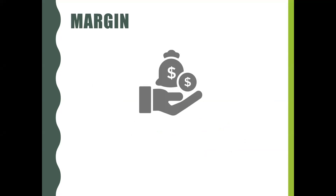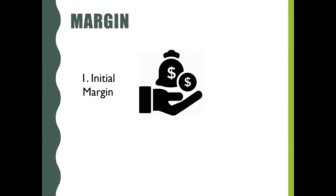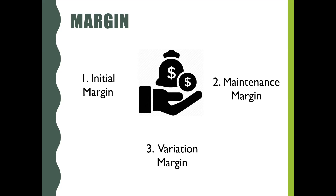There are three types of margin. Initial margin, which is collected when the parties get into a contract. Maintenance margin, which is the minimum amount that must be maintained in the deposit account at all times. Variation margin, which arises when the deposit amount goes below the maintenance margin — the concerned party then receives a margin call to refill their deposit account with the required margin amount.